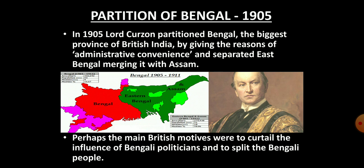In 1898, Lord Curzon became the Governor General of India. At that time, Bengal was the biggest province of British India, which included Bihar and parts of Odisha. Bengal was also the place where Congress had a stronghold. Curzon made all possible efforts to curb the nationalist movement. In 1905, he partitioned Bengal. It was said that the partition was done for administrative convenience. However, the actual reason was to separate East Bengal with its majority Muslim population from the rest of Bengal, divide the Bengali people into Hindus and Muslims, and reduce the influence of Bengali politicians.